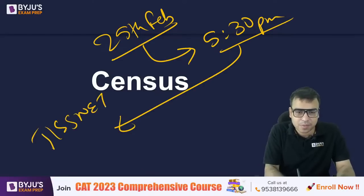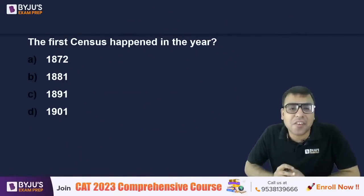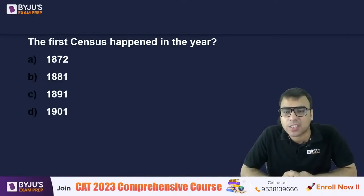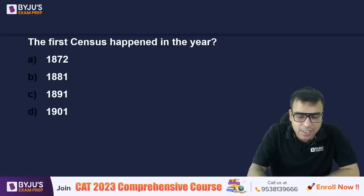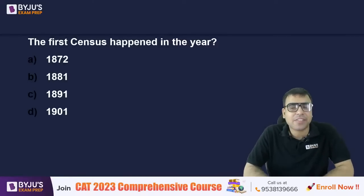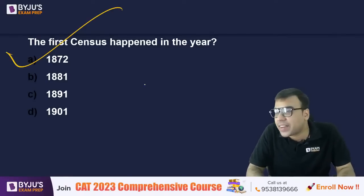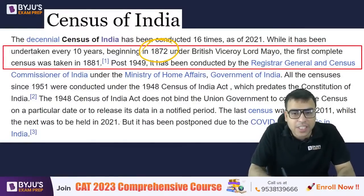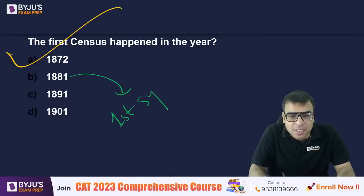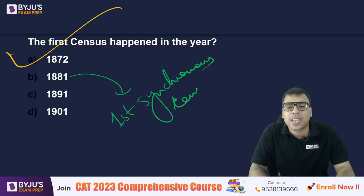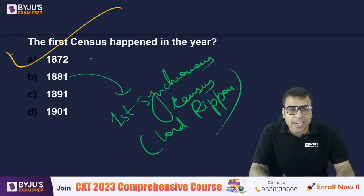Now let's talk about census. When did the first census happen? Options: 1872, 1881, 1891, or 1901. The right answer is A — 1872, during Lord Mayo. However, if they ask for the first 'synchronous census,' the answer is 1881 during Lord Ripon. Remember this distinction carefully.